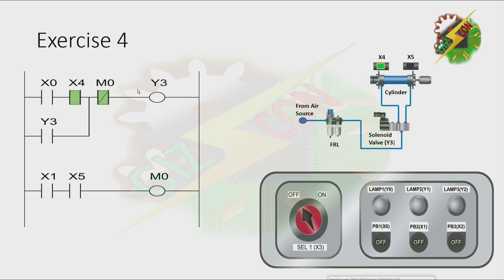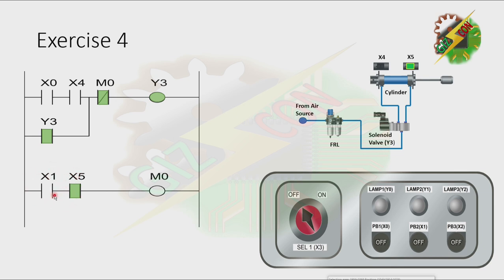This will be my answer to this problem. Let's press PB1. As you can see here, when we press PB1, Y3 will turn on. And because there is latching, Y3 will not turn off. The only way to turn it off is by energizing M0. To energize M0, we need to achieve the fully extended position and press PB2. Because we are at the fully extended position right now, we just need to press PB2. And that's it.